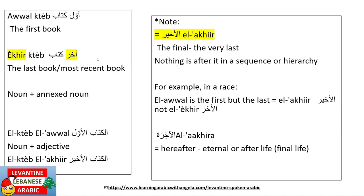If I ask شو أخر كتاب ريته — what's the last book you've read — that means the most recent book, so I use أخر. I can't say شو أخير كتاب — that would sound off. Because there could be other books after it. Typically أخر comes before another noun: أخر كتاب. I cannot say كتاب أخر — that wouldn't make sense. Or الكتاب الأخر — that wouldn't make sense either. But I can say الكتاب الأخير — the very final, the last book.